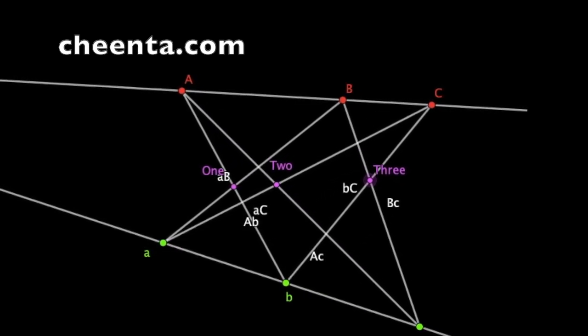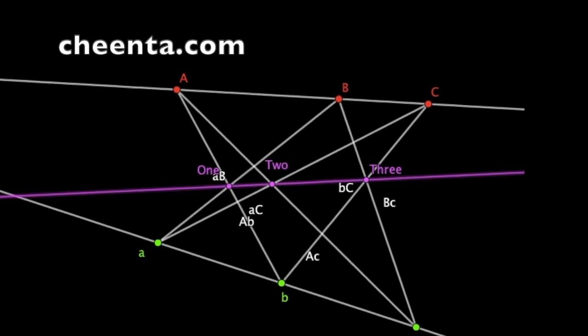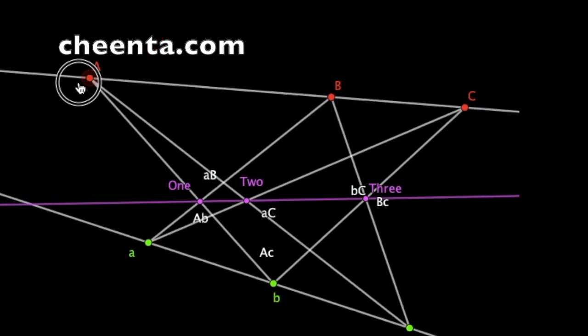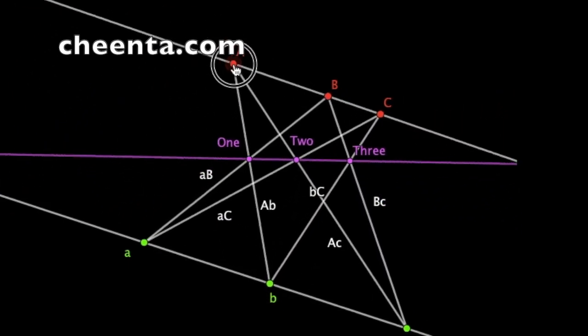Aha! They are collinear. That is, they are on the same straight line. It is a big deal to say 3 points are on the same straight line.